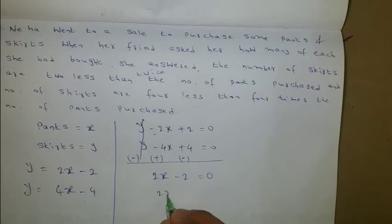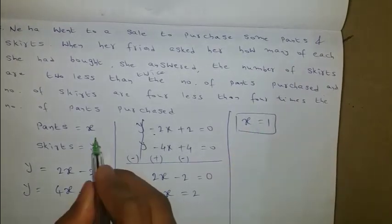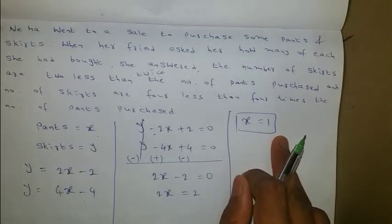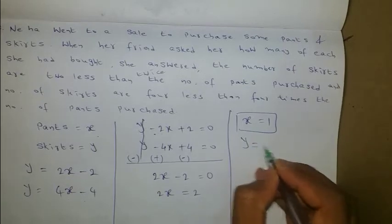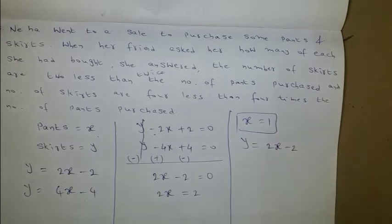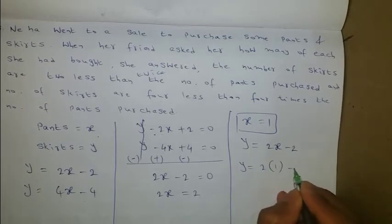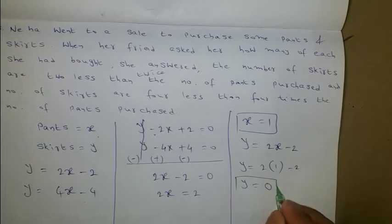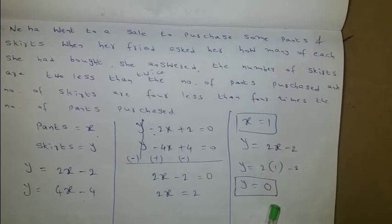Taking minus 2 to the right side gives 2x equals 2, so x equals 1. x is the number of pants, so she bought 1 pant. Substituting x equals 1 into the first equation y equals 2x minus 2 gives y equals 2 minus 2, which is 0. So she bought 1 pant and 0 skirts.